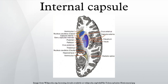The posterior limb also contains the fibers of optic radiation from the lower visual centers to the cortex of the occipital lobe, acoustic fibers from the lateral lemniscus to the temporal lobe, and fibers which pass from the occipital and temporal lobes to the nuclei pontis.